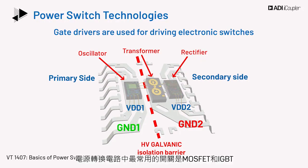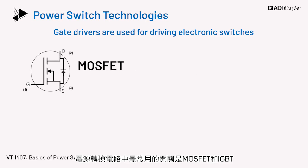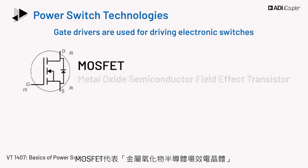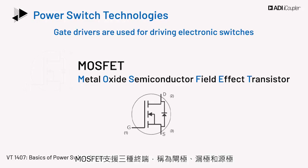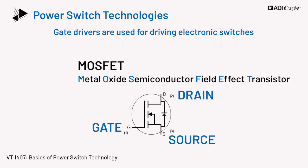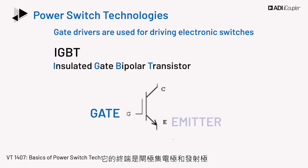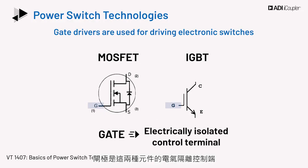The most common switches used in power conversion circuits are the MOSFET and the IGBT. MOSFET stands for Metal Oxide Semiconductor Field Effect Transistor. The MOSFET has three terminals called the gate, drain, and source. IGBT stands for Insulated Gate Bipolar Transistor. Its terminals are the gate and emitter. The gate is the electrically isolated control terminal for either device.